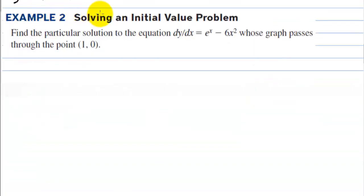Example 2. Solving an initial value problem. Find the particular solution to the equation dy/dx equals e to the x minus 6x squared whose graph passes through the point (1, 0). Now we have dy equals e to the x minus 6x squared dx. So we multiply both sides by dx, and on the left side the dx is cancelled out. Then we integrate both sides to find the original function.